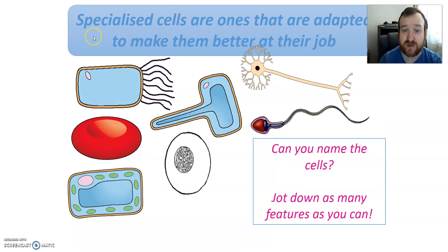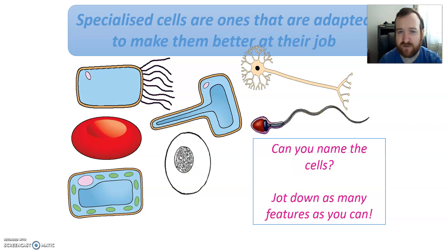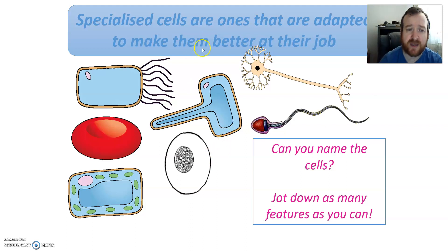Adaptation is a really important word when we're thinking about the cells today, because we're not looking at standard plant and animal cells — we're looking at specialized cells. Specialized cells are ones that are adapted to make them better at their role or function. I've got seven examples of specialized cells here. I'd like to see how many you can name and jot down what features you can see. Spend a couple of minutes, pause the video, and see how many cells you can name.